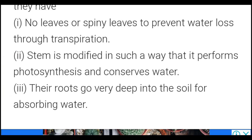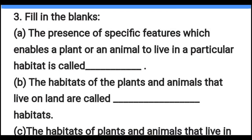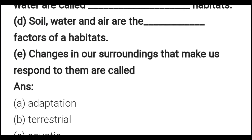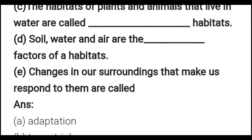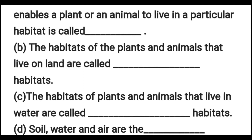Question one is a fill-in-the-blanks. Part A: The presence of specific features which enable a plant or an animal to live in a particular habitat is called blank — write in the blank: adaptation.